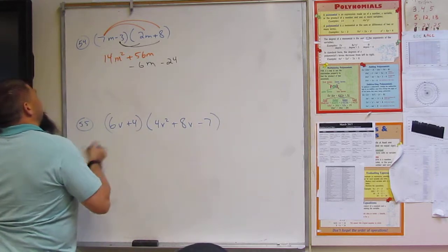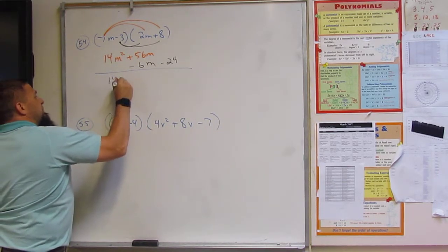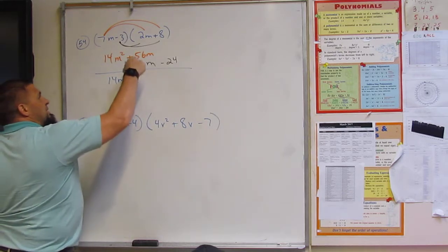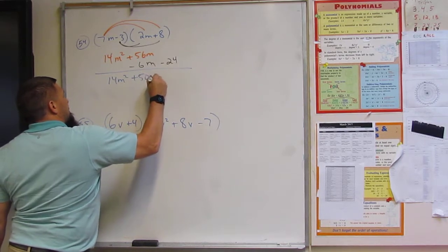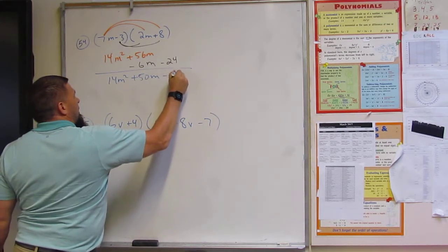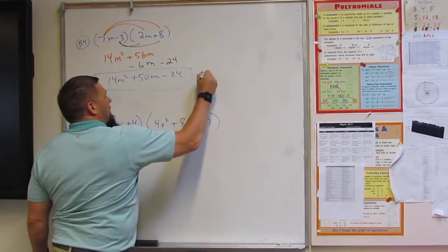Then I add these up. This adding to nothing is just this, right? What's 56 minus 6? 50. And then 24 plus nothing? Bang.